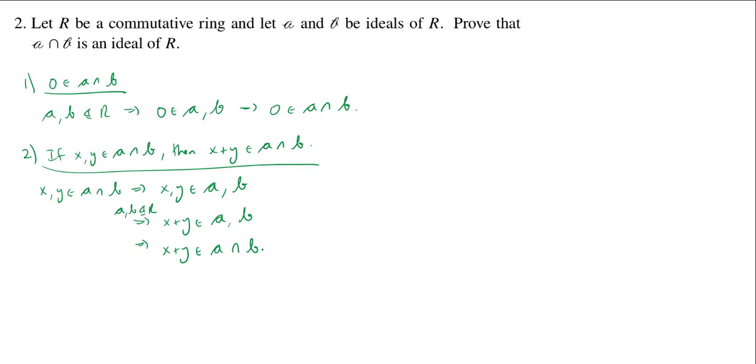Okay, there we go. It's closed under addition. All right, third one. We need to show that this ideal A or this proposed ideal A intersect B absorbs R multiplication. So, if X is in the intersection and, say, little r is in R, then Rx is in the intersection.